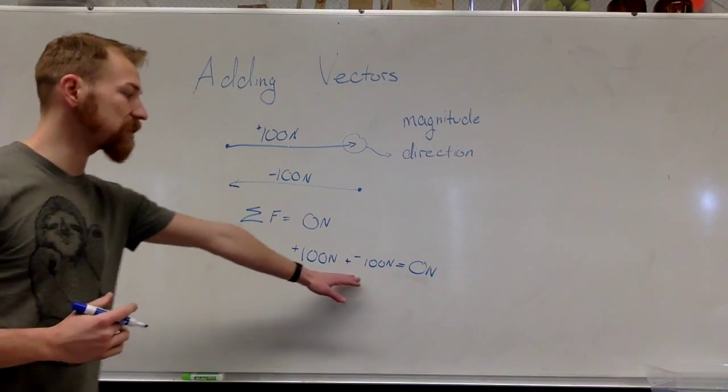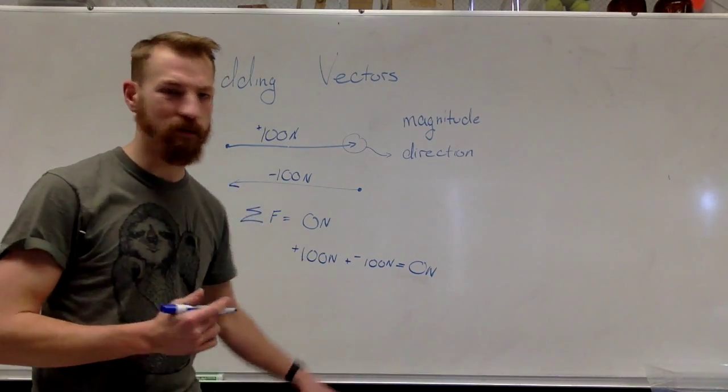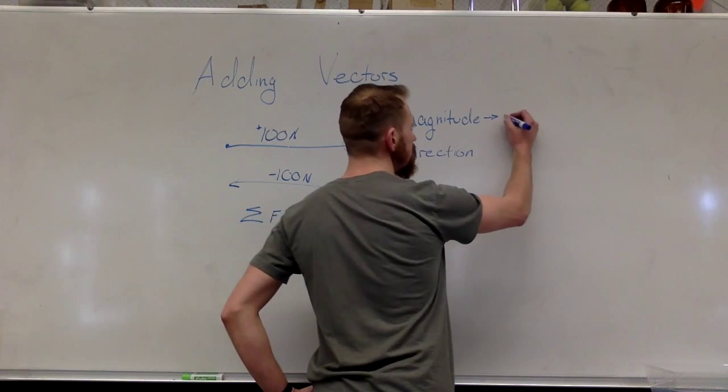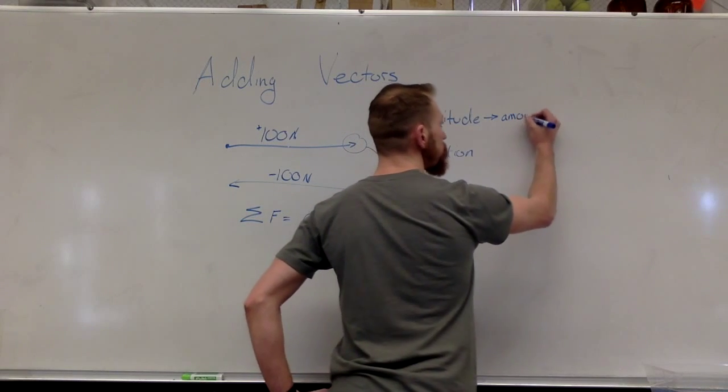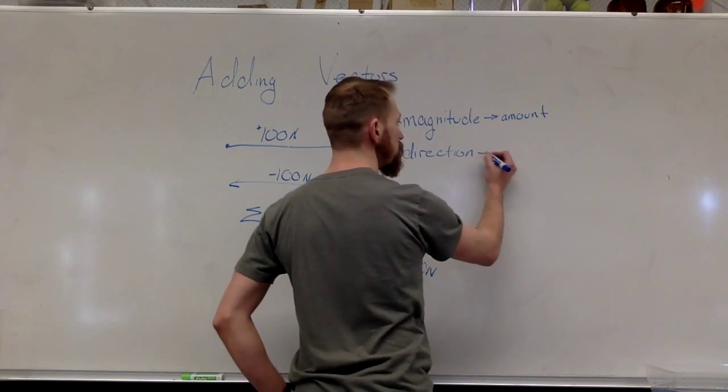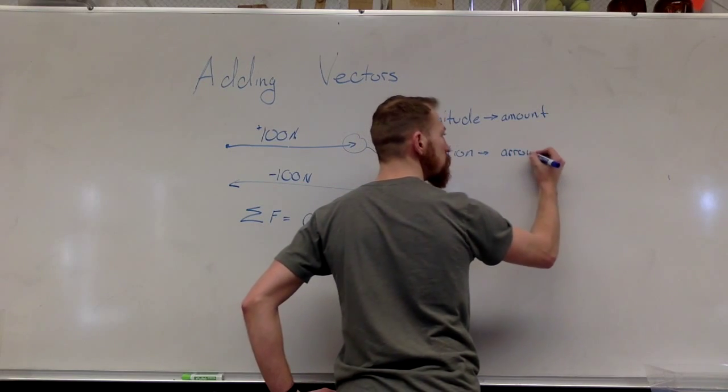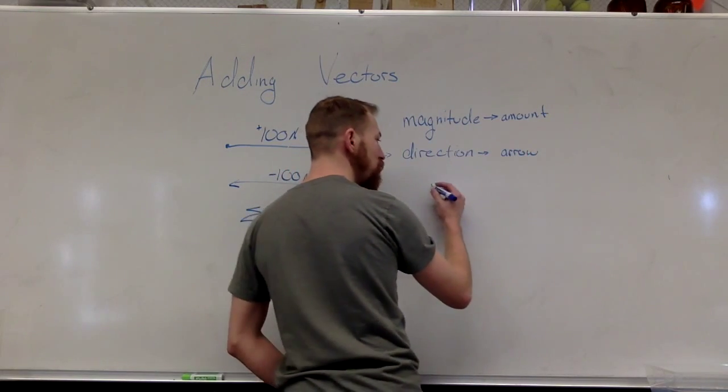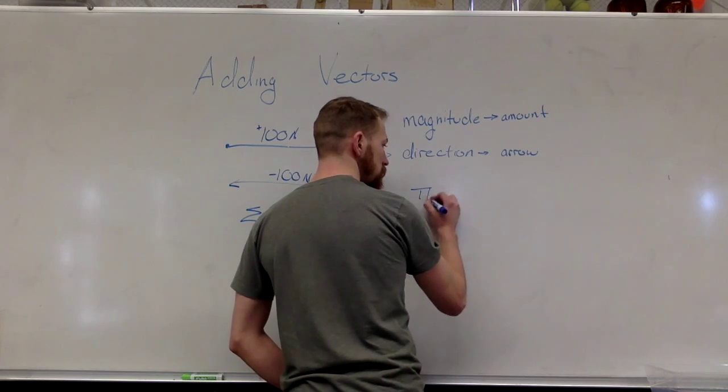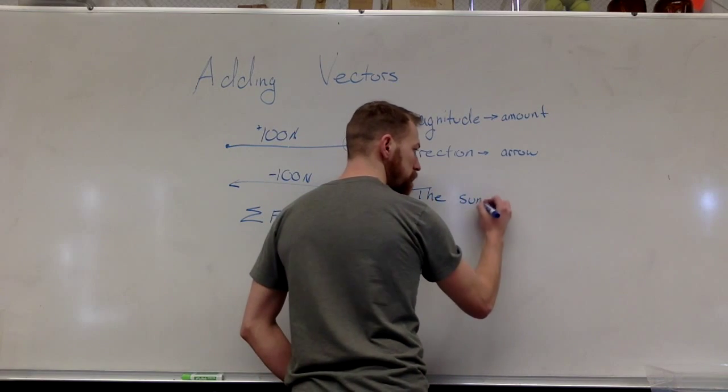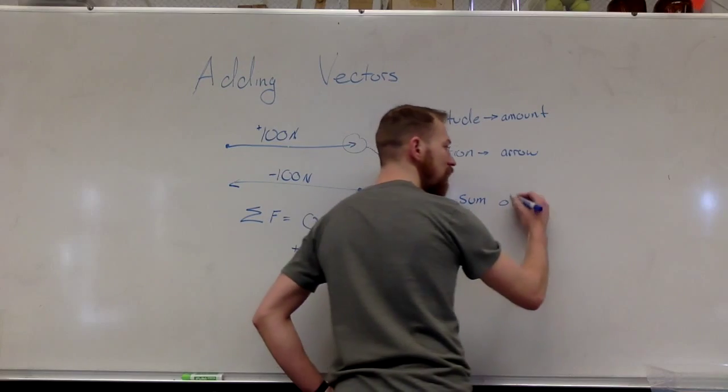That actually brings me to my next vocabulary word. So magnitude is the amount, the direction is the arrow, and if we add two vectors together,